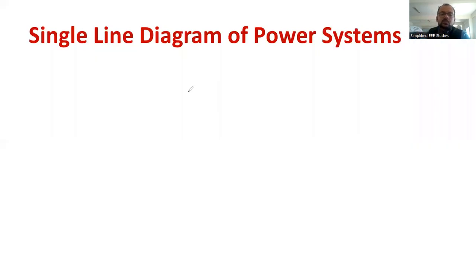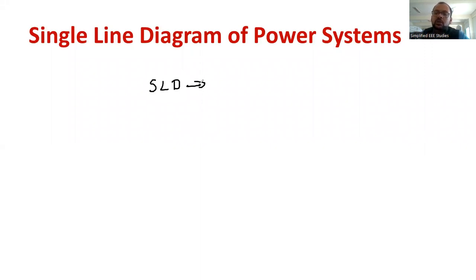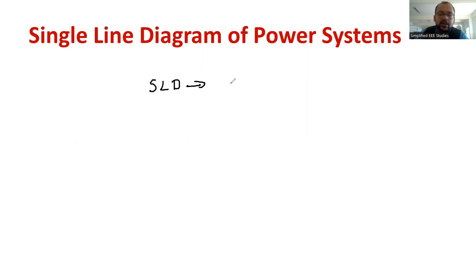Now there is one terminology called single line diagram, which is also known as SLD. In electrical engineering, a single line diagram is a method to represent the entire power system by using certain symbols — it's just like a flow diagram. I'm going to discuss the importance of the power system by using a single line diagram, and you can represent the entire power system this way.